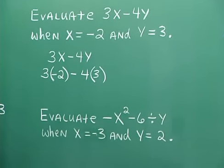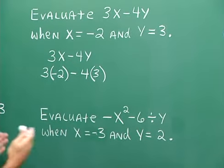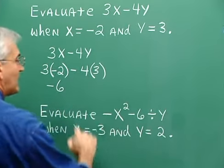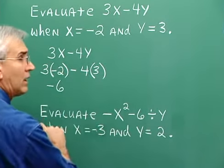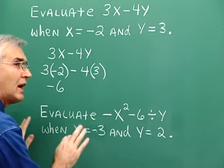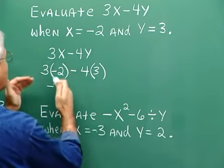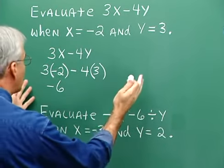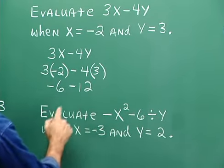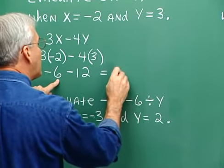Now we perform the indicated operations according to our order of operations agreement. Inside parentheses, we have nothing to do. We have no exponents, so we multiply and divide from left to right. 3 times negative 2 is negative 6. I'm going to perform both multiplications at once since these two have nothing to do with one another. Negative 4 times 3 is negative 12. So negative 6 with negative 12 — the signs are the same, so we add and get 18, and it's negative 18.